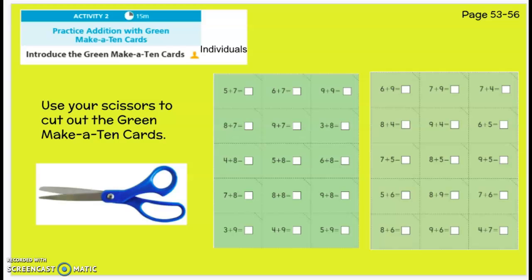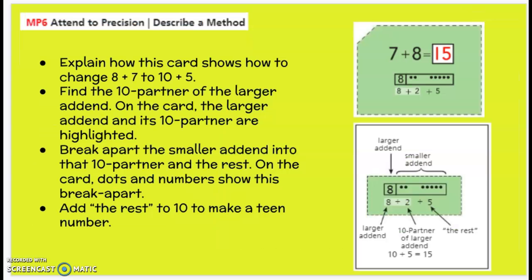Next, you can go to pages 53 and 55. So the backsides of those would be 54 and 56. And use your scissors to cut them apart to do the make 10 cards. So each card shows how, like this one shows how to change 7 plus 8, or thinking of the 8 first because it's the larger partner, and making a 10 and 5 more.